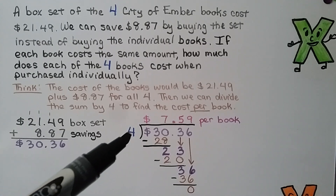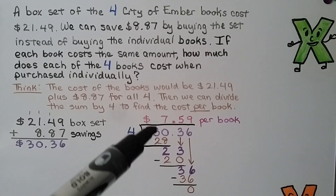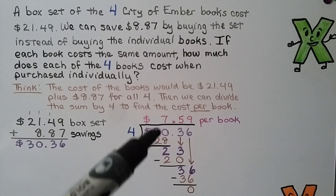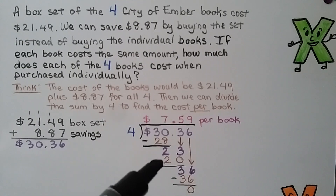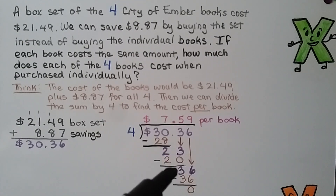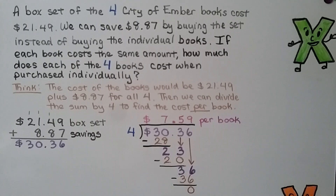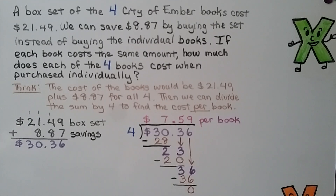We divide $30.36 by 4 to find the price per book. 4 can't fit into 3, so we start with 30. 4 fits into 30 seven times since 4 times 7 is 28; we subtract and get 2. We bring down the 3. 4 fits into 23 five times since 4 times 5 is 20; we subtract and bring down the 6. 4 fits into 36 nine times since 4 times 9 is 36; we get a zero remainder. The decimal point in the quotient goes directly above the decimal in the dividend. Each book costs $7.59 individually.